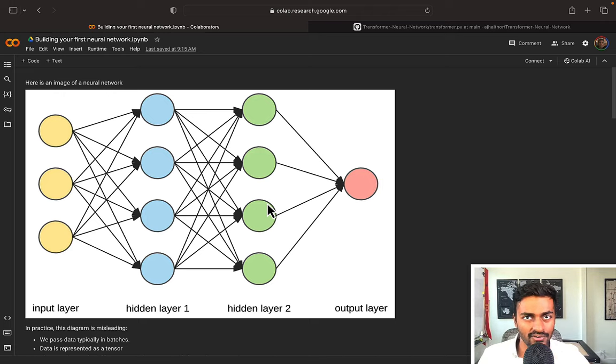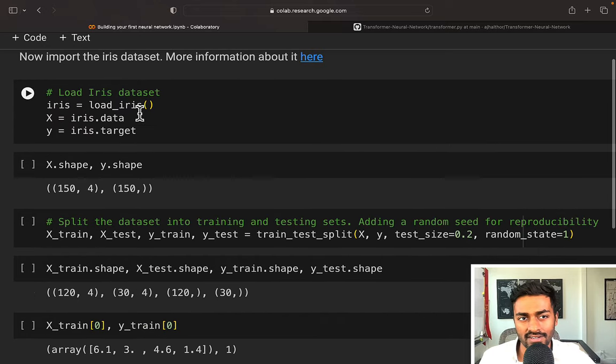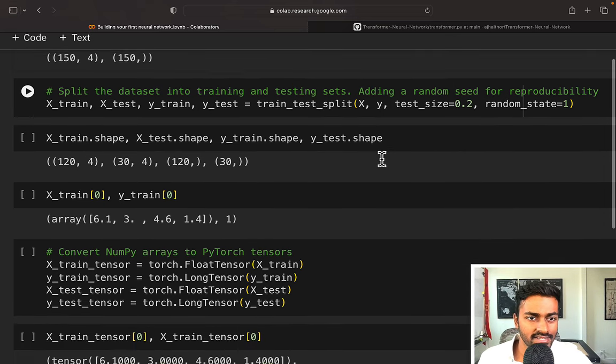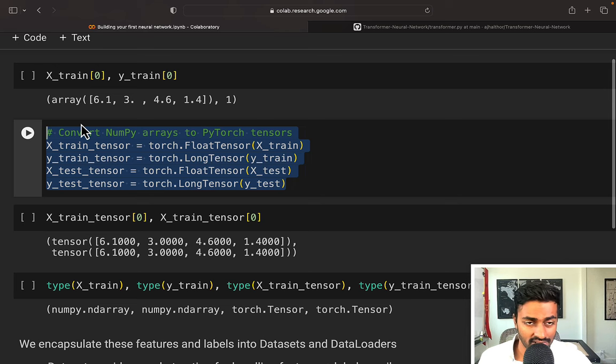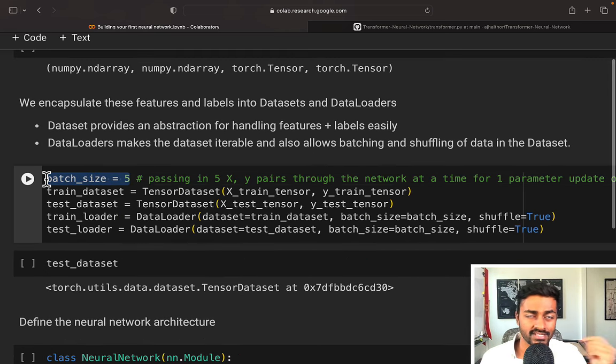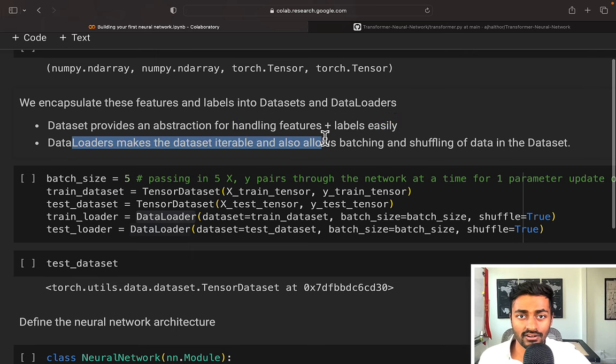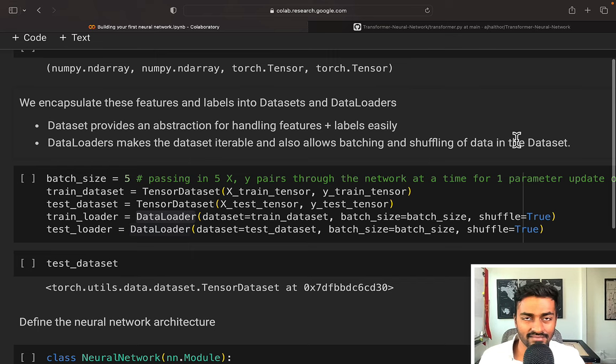So keeping this in mind, it'll become more clear when we see this in code. So we can begin by importing some libraries, and we're going to work with the iris dataset, which is basically a classification dataset to determine, depending on the type of sepal and petal lengths, what is the type of flower it is. It's one of three classes. And so we have 150 examples with four features, and there's 150 labels accordingly. We then split this data into test and train sets. We'll convert all of these examples into floating point tensors. We then initialize a batch size to be 5. This is because, as mentioned before, data is not just passed one at a time to a neural network, it is passed in batches into a neural network. We then put all of our data into dataset and use data loaders. The goal of these is that dataset provides an abstraction for handling features and labels easily. And data loaders makes the dataset iterable and allows batching and shuffling of data in the dataset.